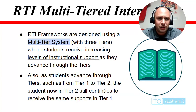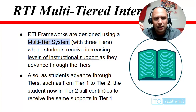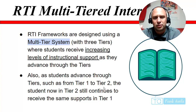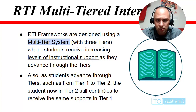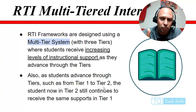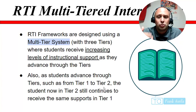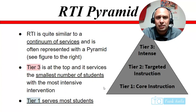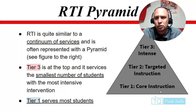The multi-tiered intervention is a framework with three tiers. Students receive increasing levels of support as they advance through the tiers — a student in tier two still receives tier one supports plus tier two supports, and a tier three student gets all three tiers' supports. RTI is represented with a pyramid: tier three at the top is intense support, tier two in the middle is targeted instruction, and tier one at the base is core basic instruction.